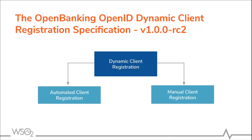Before allowing third-party application providers, known as TPPs, access to consumer financial data, the bank must make sure that the data does not fall into wrong hands. To make sure the applications accessing the data are secure, the applications need to be first registered with the bank.